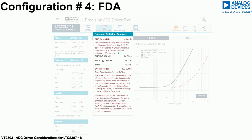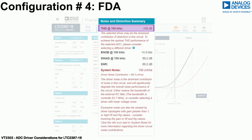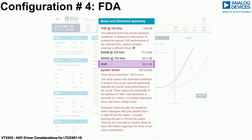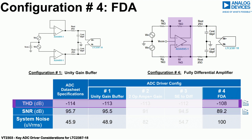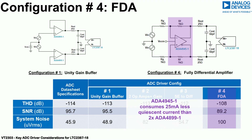The simulation shows a distortion of minus 108 dB and a system noise of 100 microvolts RMS, with the associated signal-to-noise ratio projected to be 89.2 dB. Comparing with the performance achieved from recommendation 1, the SNR is reduced by approximately 6 dB while the THD reduces by 5 dB. The reduced performance comes at the benefit of 25 mA lower quiescent current versus the two ADA 4899-1 buffers.